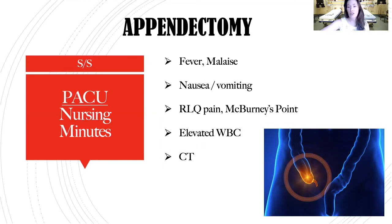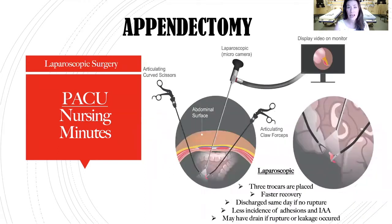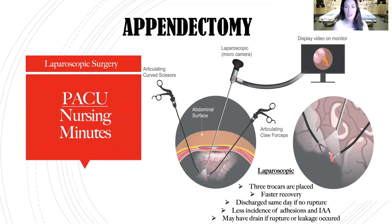Those options are usually a laparoscopic appendectomy or antibiotic management. With laparoscopic surgery, the surgeon places three trocars into the abdomen — one is a camera to visualize, another is scissors, and the third is forceps and claws. This is the preferred method with a faster recovery rate.